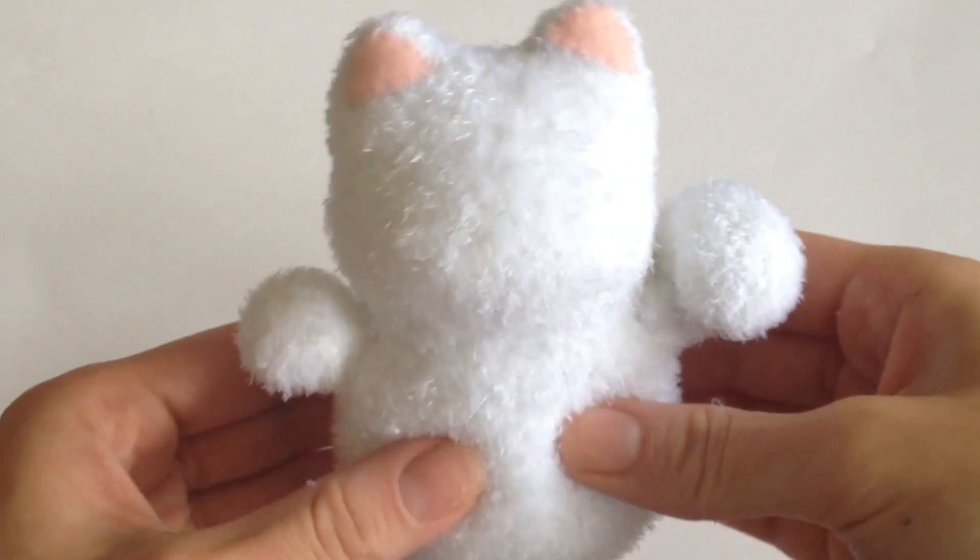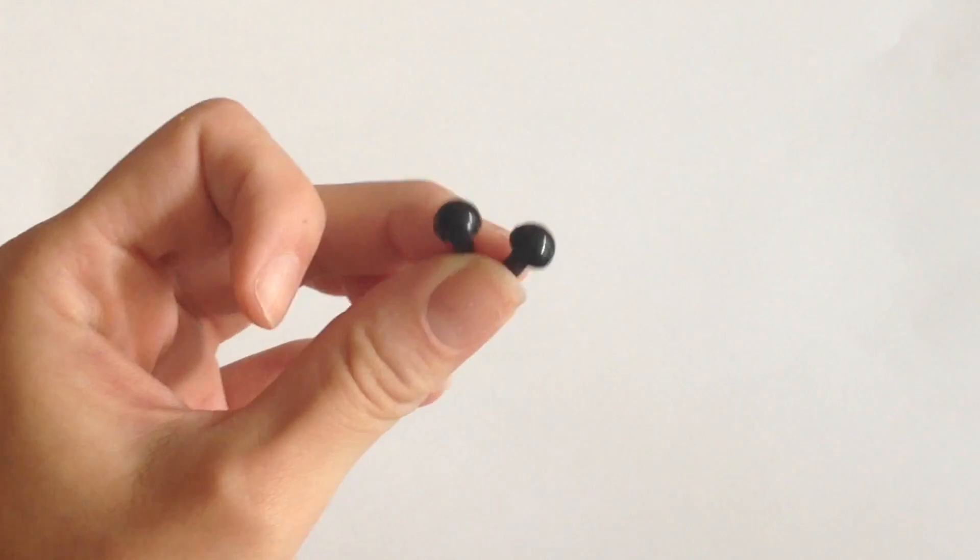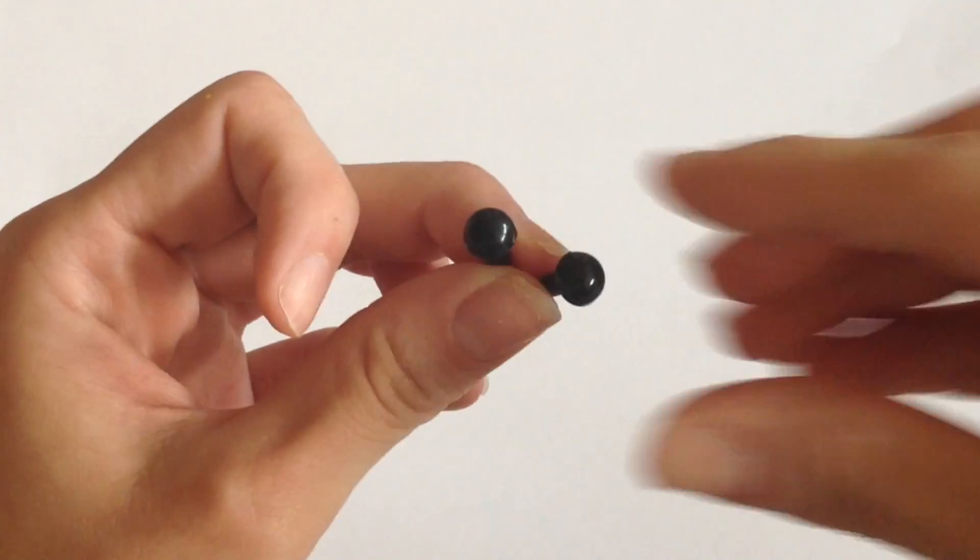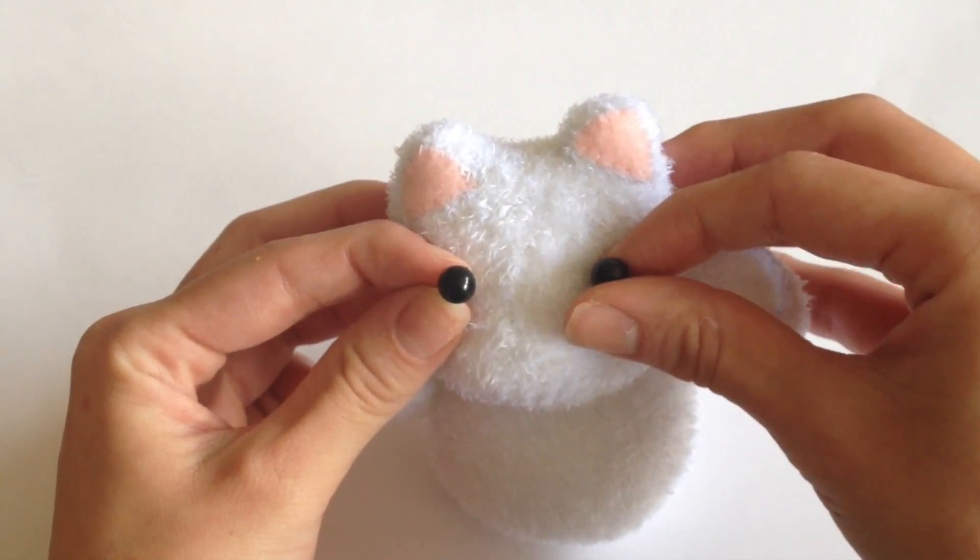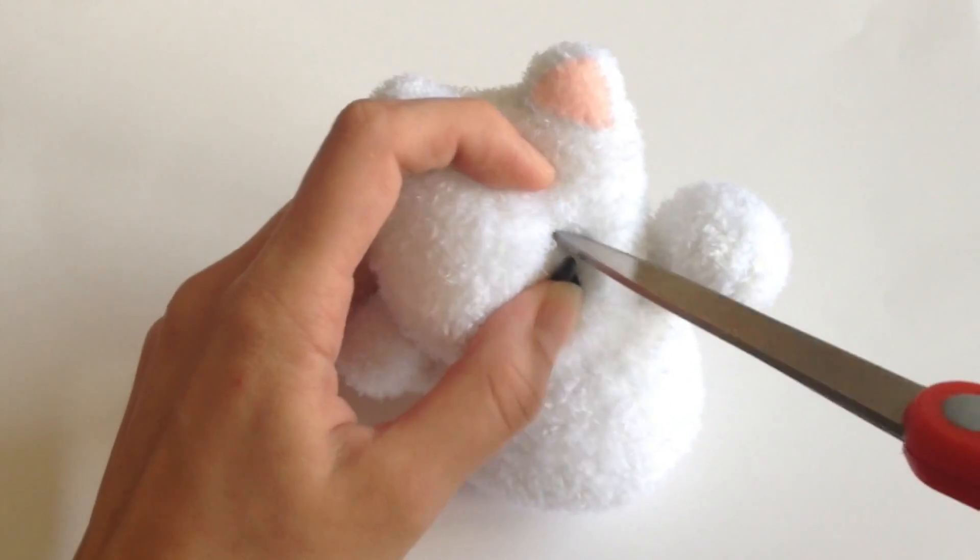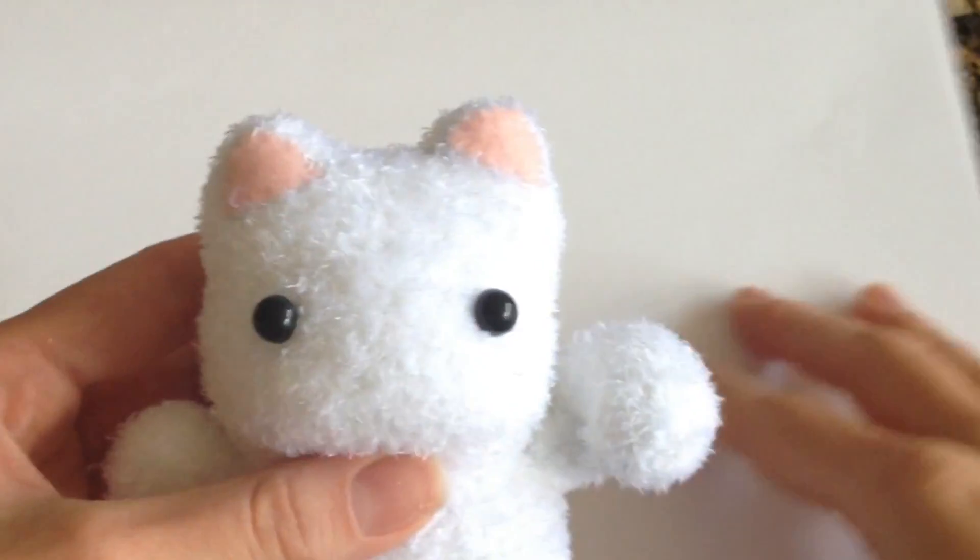So this is what my Maneki Neko looks like so far. I'm going to add the rest of its face. I'm using some animal eyes. I'm positioning them where I think they belong. With a pair of scissors I'm going to cut a small little hole and super glue these eyes in.